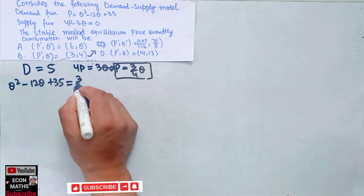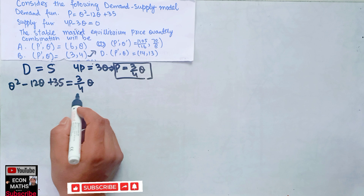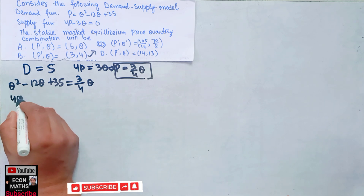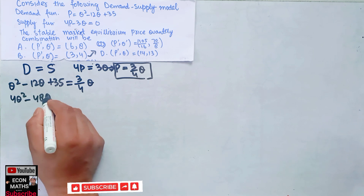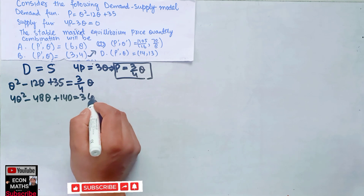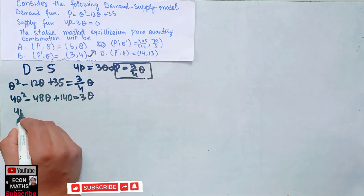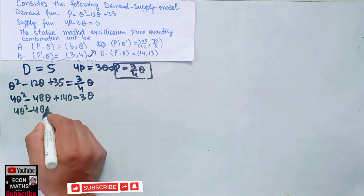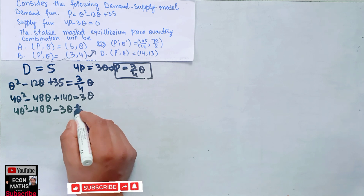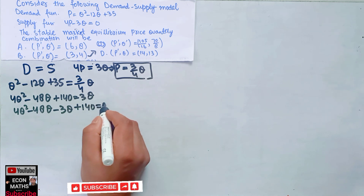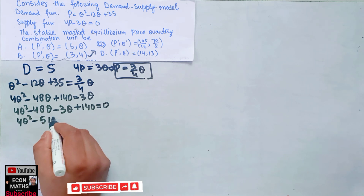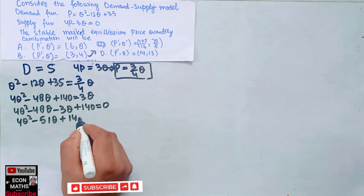Equating demand equal to supply gives us Q² - 2LQ + 35 = (3/4)Q. Multiplying through by 4 gives 4Q² - 48Q + 140 = 3Q. Rearranging by subtracting 3Q from both sides, we get 4Q² - 51Q + 140 = 0. This is our quadratic equation.